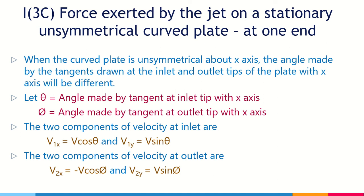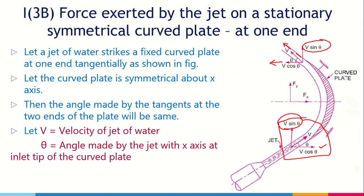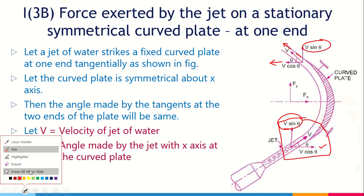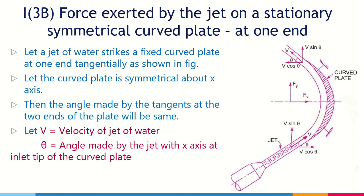Now for the unsymmetrical curved plate at the tip, there is a very small difference. For a symmetrical plate, the angle made by the tangent of water at the inlet and the angle at the outlet are the same — both theta. But when the plate is unsymmetrical about the x-axis, the two halves are not the same, so the angle at the inlet and at the outlet will not be equal. The water leaving the plate deflects at a different angle.